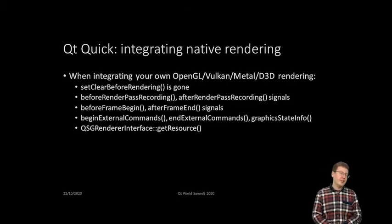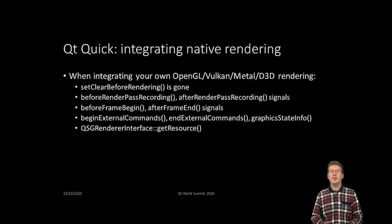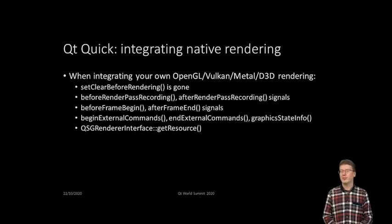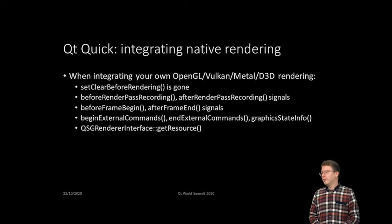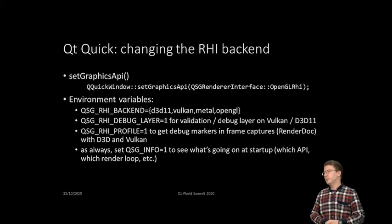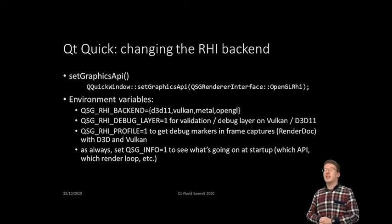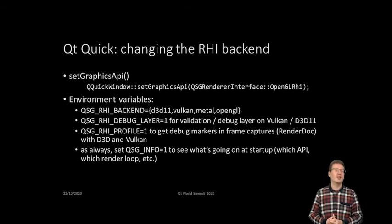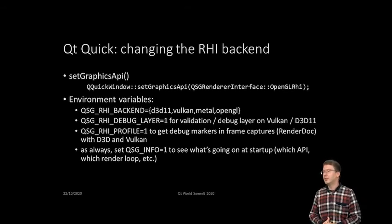Additionally, QSGRendererInterface is a fairly low-level API that allows access to native objects — Vulkan device, command buffers, other things used by the Qt Quick scene graph — in case you need it for some purpose in your own custom Vulkan or other code. As a reminder, these environment variables and other ways to configure Qt Quick are now essential in Qt 6.0, since this is the only way of operating. We do not have the old direct OpenGL rendering path anymore, neither in Qt Quick nor in Qt Quick 3D.